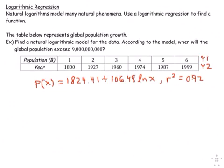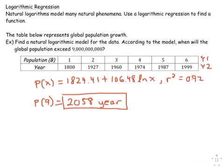And since we stored this into our calculator, when I want the value of the population at year 9, I could hit on my calculator second graph for table, scroll down to the x value of 9 and read off the approximate value of 2058. In that year, that's when the population will exceed 9 billion.